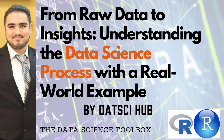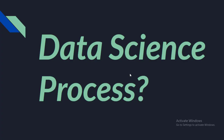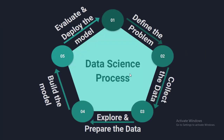In this lecture we will talk about the data science process. The data science process is a structured approach to solving data-related problems involving several stages from problem definition to model deployment. The first step is to clearly define the problem you are trying to solve — understanding the business problem, identifying the stakeholders, and specifying the data requirements. The second step is to collect the data, which may involve obtaining data from various sources such as databases, APIs, or web scraping.